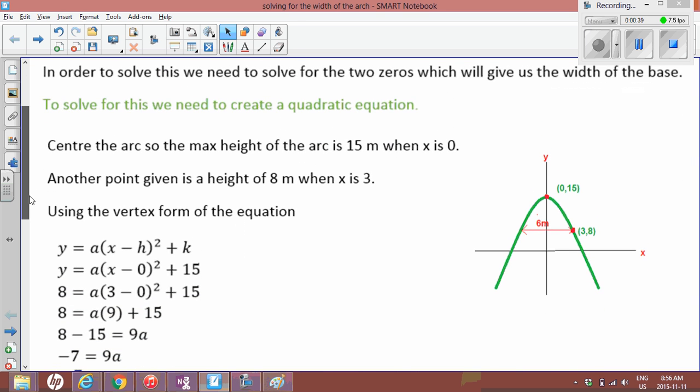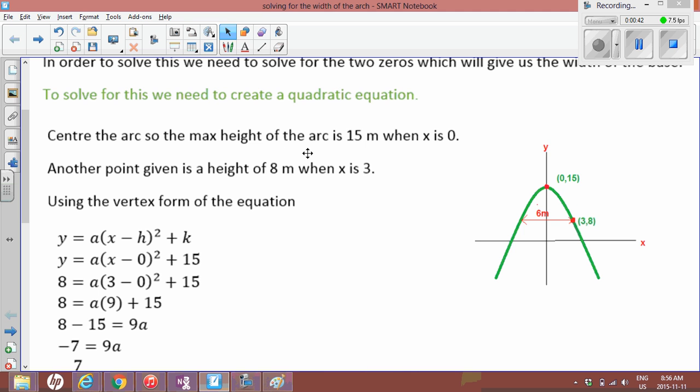So they've given us two pieces of information. They told us the max height of the arc is 15 meters. So I'm going to label that. We're going to center it at zero so that it's in the middle. So I sketched it just so you can have a visual, and that's the vertex. So it's (0, 15). So when x is 0 our max height is going to be 15.